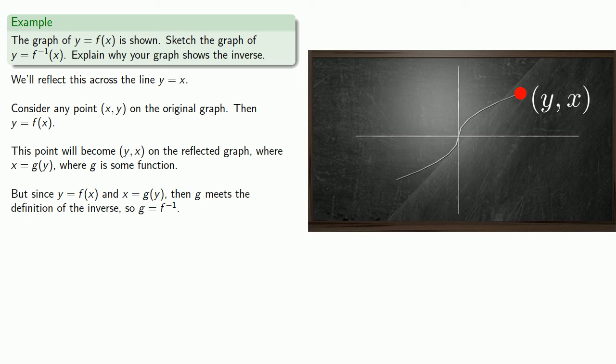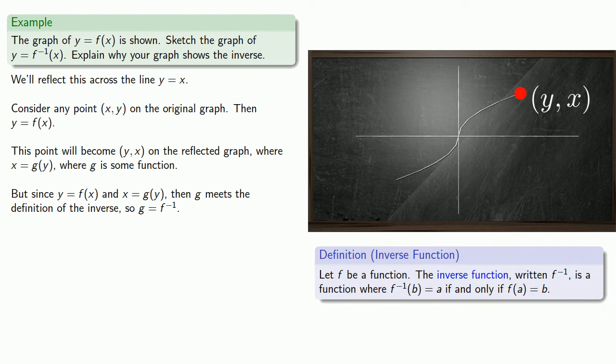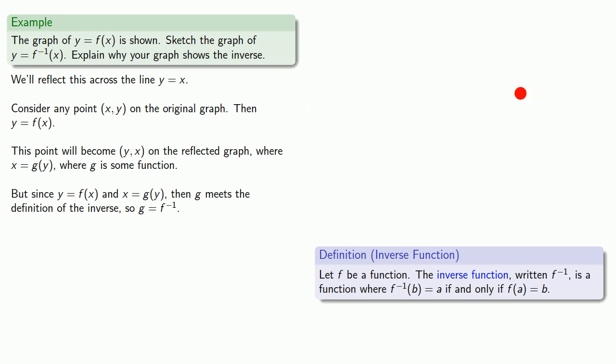But since y equals f of x, and x equals g of y, then g meets the definition of the inverse, so g is the inverse function. With these ideas in mind, we can lend some insight to the secret of the square root.